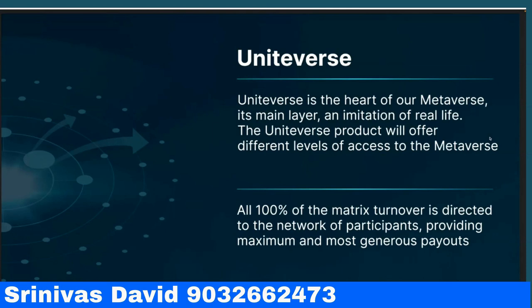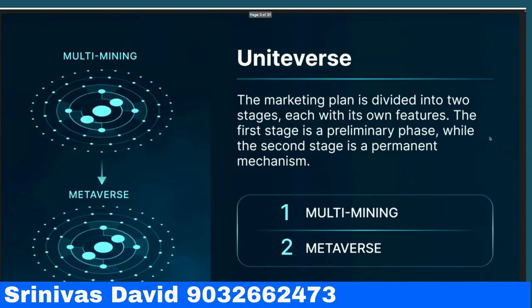There is also a passive residual component built into the smart contracts, which makes it very unique. It is directly connected to the launch of MetaForce, which is going to be in just a few short months. UniVerse is the heart of the metaverse — it's a main layer and imitation of real life. The UniVerse product will offer different levels of access to the metaverse, and 100% of the matrix turnover is directed to the network of participants, providing maximum and most generous payouts.